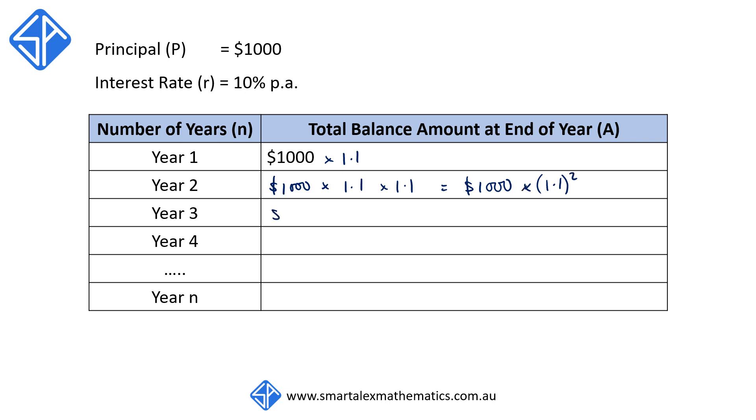So in year three, we start off with 1,000 times 1.1 squared. And this amount is going to increase by another 10%, so that's multiplying by another 1.1. This will simplify to 1,000 times 1.1 cubed.